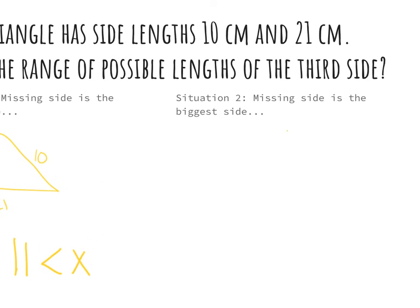The second scenario we want to think about is, well, what if the biggest side is the one that's missing? So I have 10 and 21. The biggest possible side when I add those together is 31. And again, 31 doesn't work because 10 plus 21 equals 31. But 30 works and 30.5 works and 30.9 works.